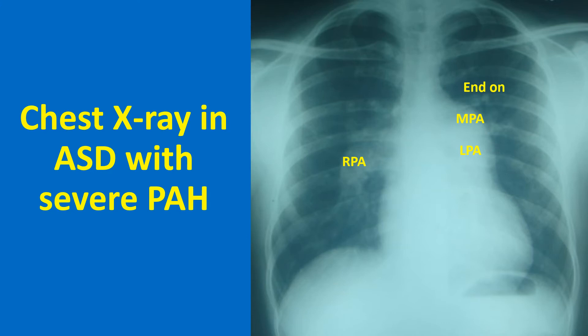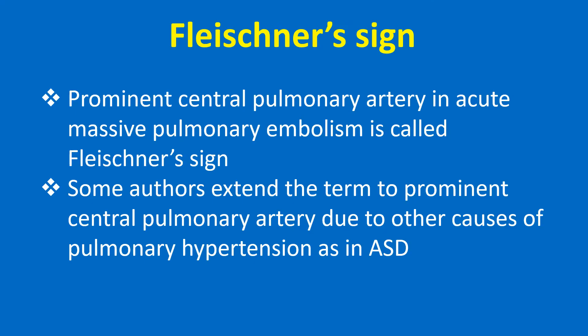In ASD, shunt is fully established only when the right ventricular muscle mass regresses. Some cases with higher pulmonary vaso-reactivity develop pulmonary hypertension early. Prominent central pulmonary artery in acute massive pulmonary embolism is called Fleischer's sign. Some others extend the term to prominent central pulmonary artery due to other causes of pulmonary hypertension, as in ASD.